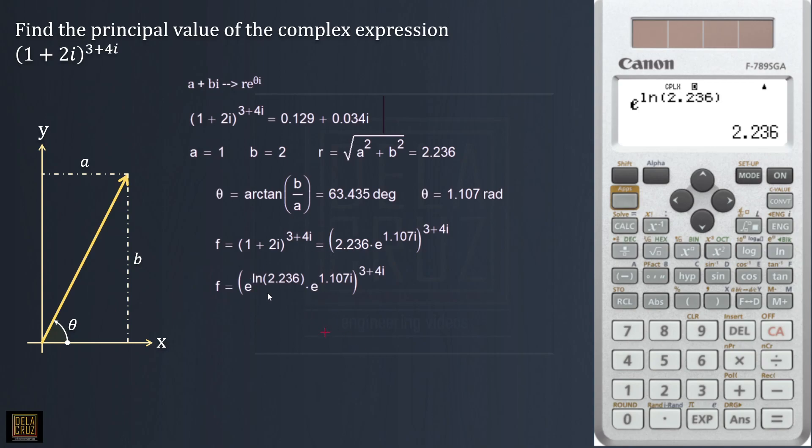This will become, if we try to add that one - ln of 2.236 plus 1.107i, then of course raised to 3 plus 4i. Combined, because they are multiplied, but the exponents shall be added. Now, a quantity raised to another exponent here - this one will be distributed to here, multiply. So in this case, this becomes f equals e raised to - that (3 + 4i) will be multiplied to this exponent.